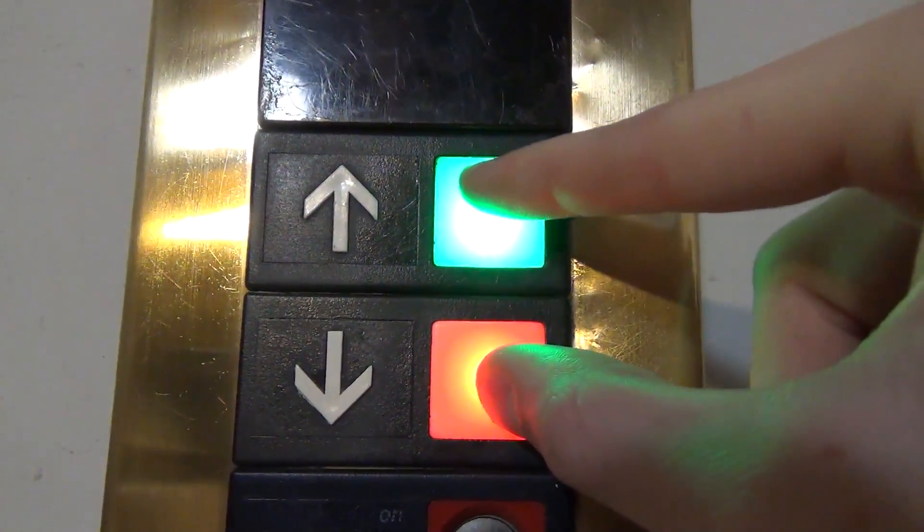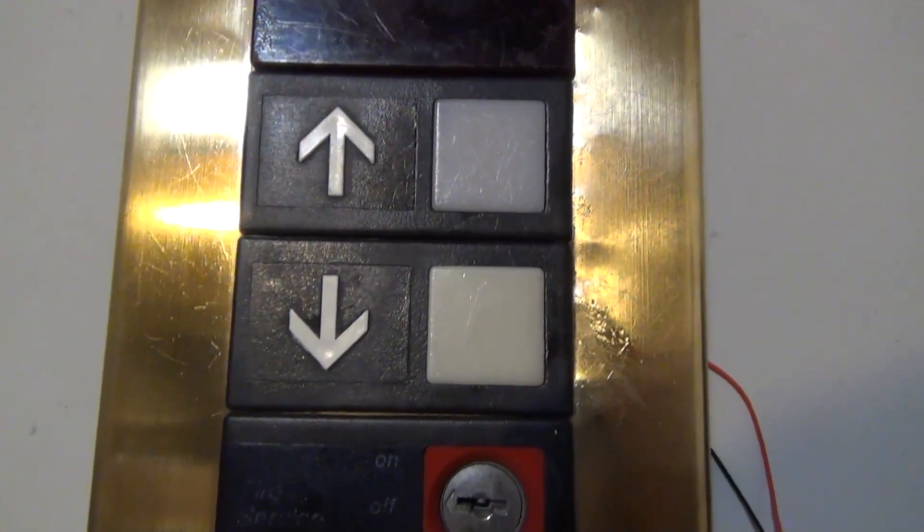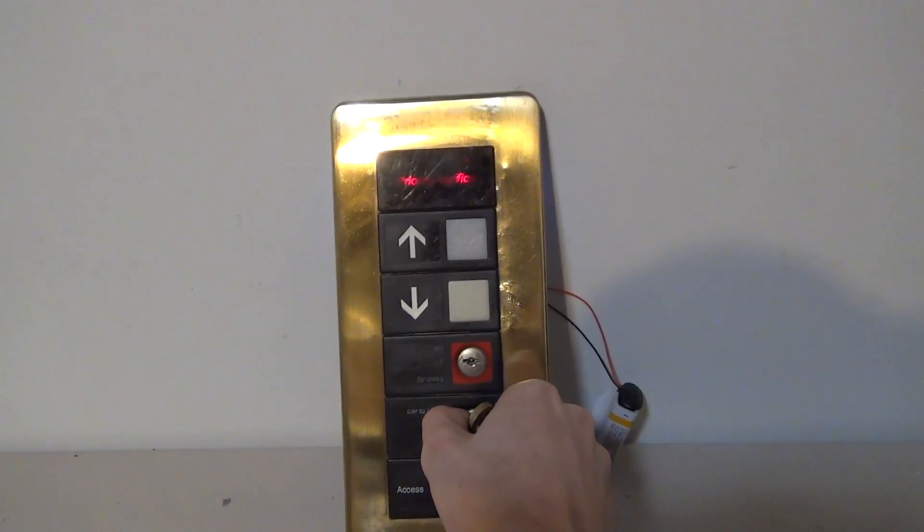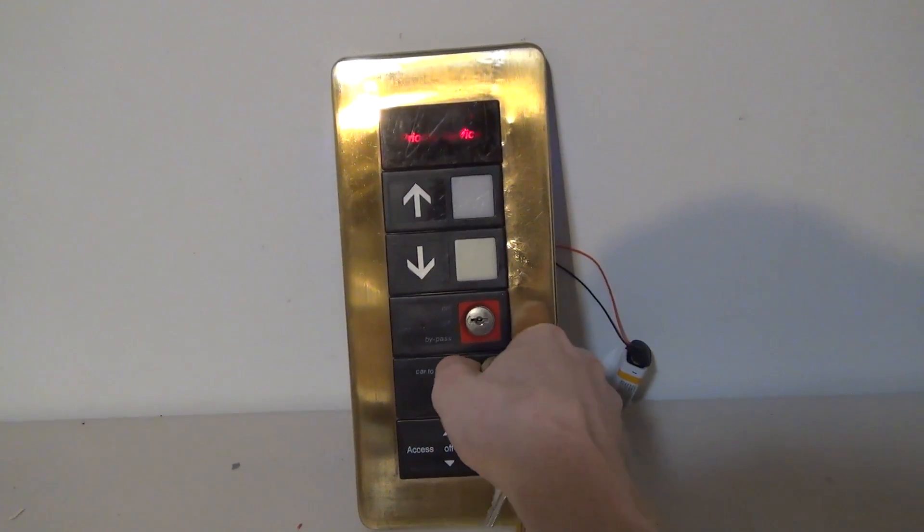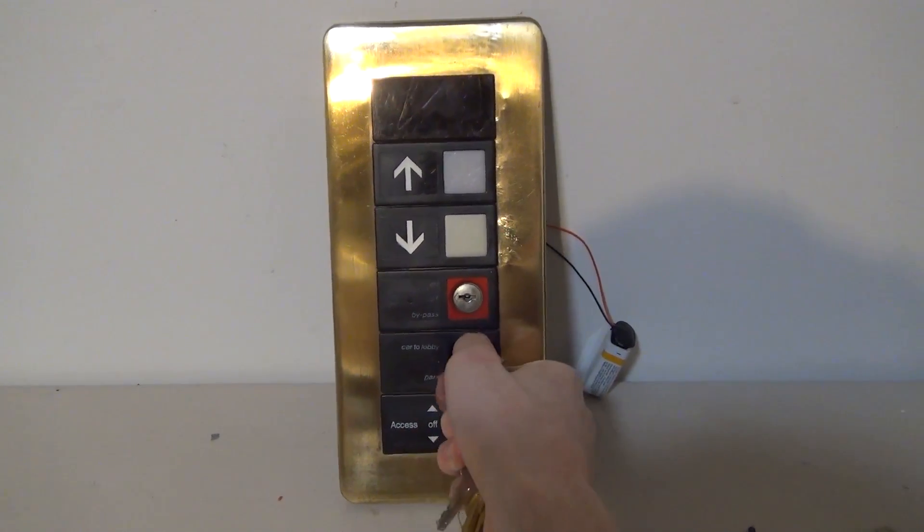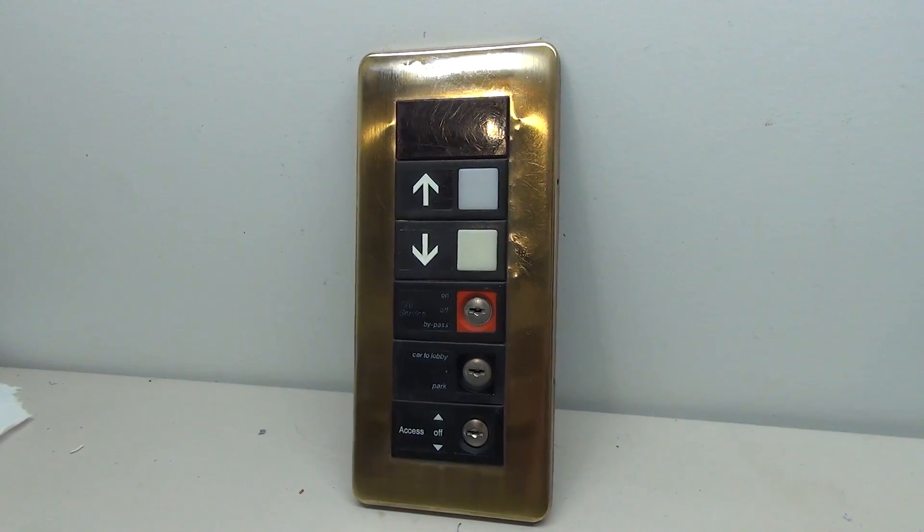When you press the down button it lights up, and you press the up button and it lights up green and red which looks pretty cool. If you use the key switch you can activate the priority service light.